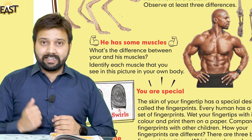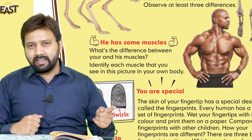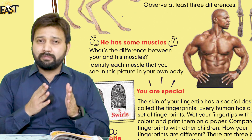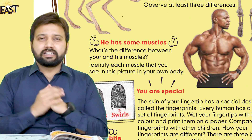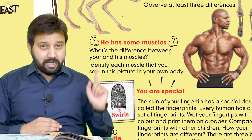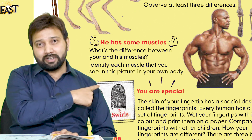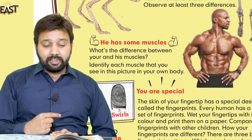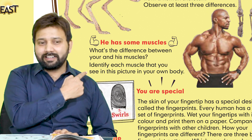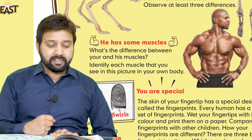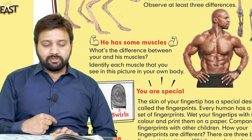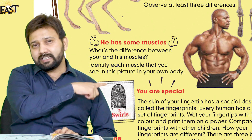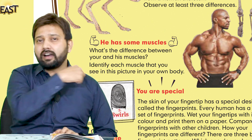ہماری next activity muscles کی ہے. جیسا کہ topic میں ہم نے پہلے bones کے بارے میں پڑھا، پھر muscles کے بارے میں، اور پھر skin اور teeth کے بارے میں — تو اب ہماری activity muscles کی ہے. یہاں آپ دیکھ رہے ہیں ایک بہت muscular بندہ ہے — what's the difference between your and his muscles? آپ نے identify کرنا ہے each muscle that you see in the picture in your own body — کون کون سے muscles اس تصویر میں ہیں اور آپ کے پاس وہ کہاں موجود ہیں۔